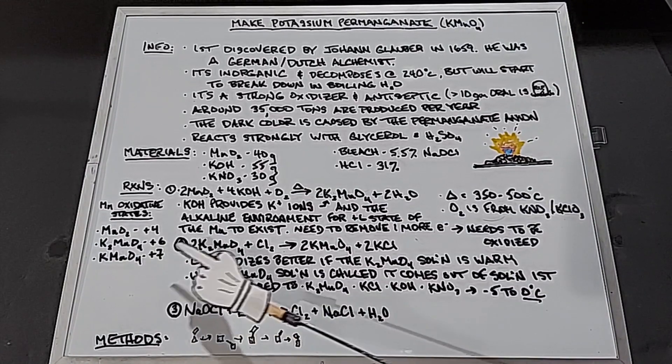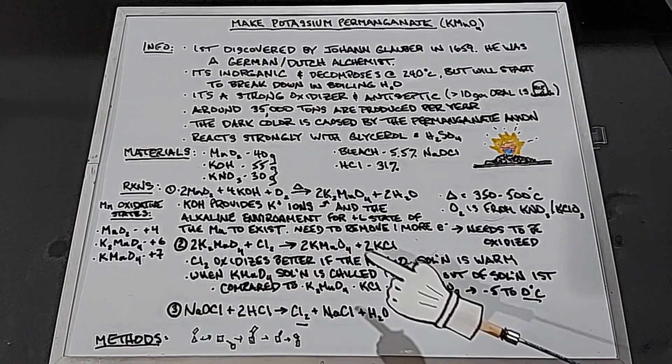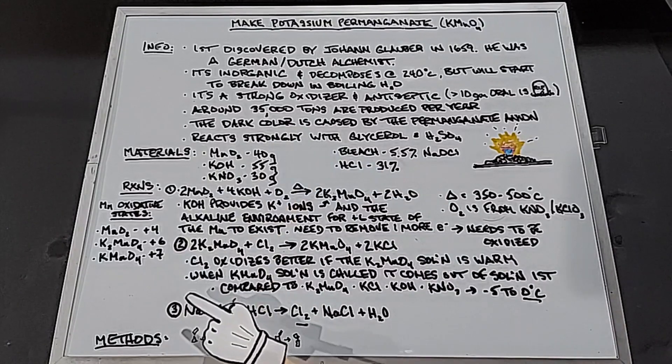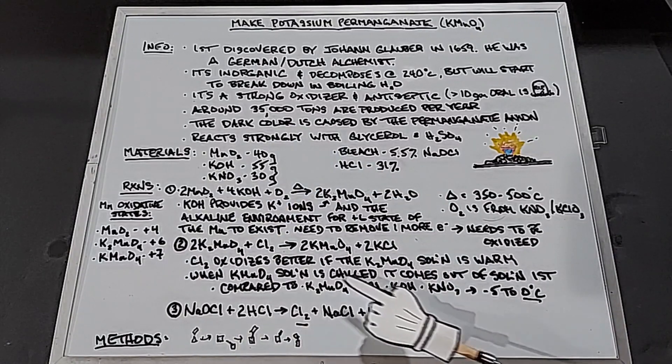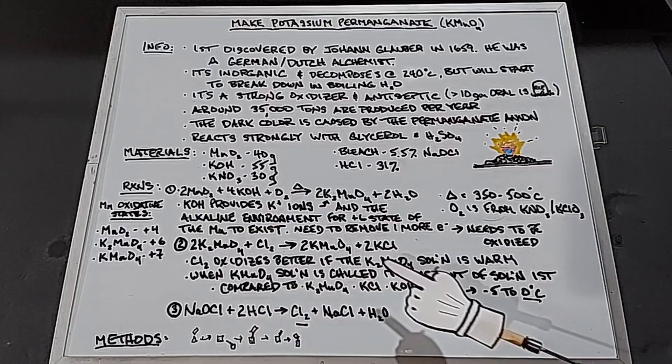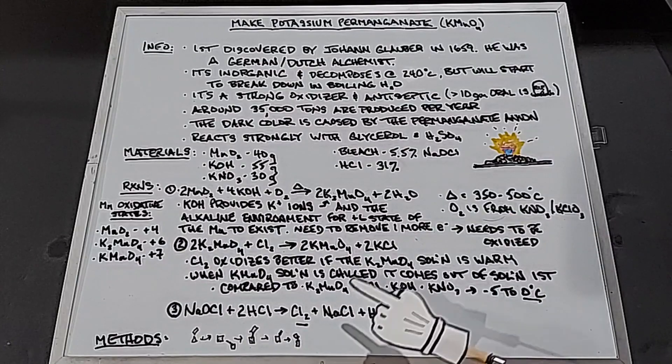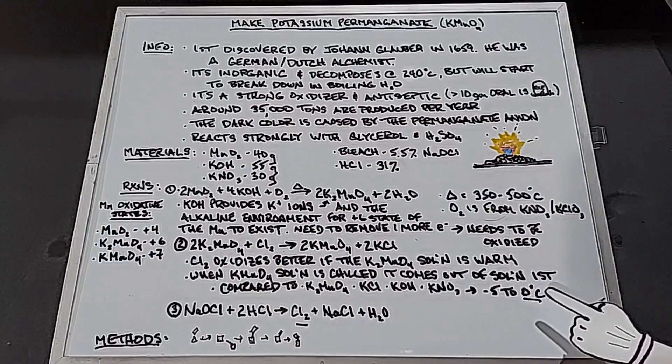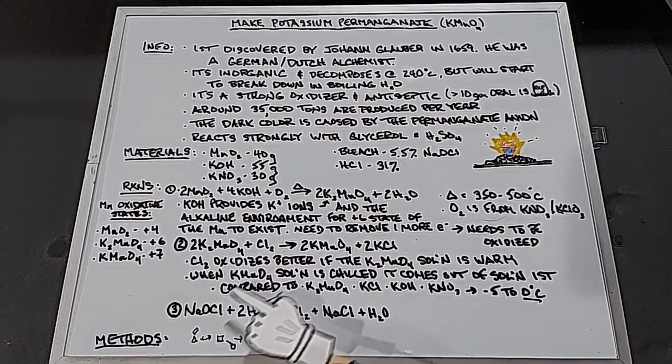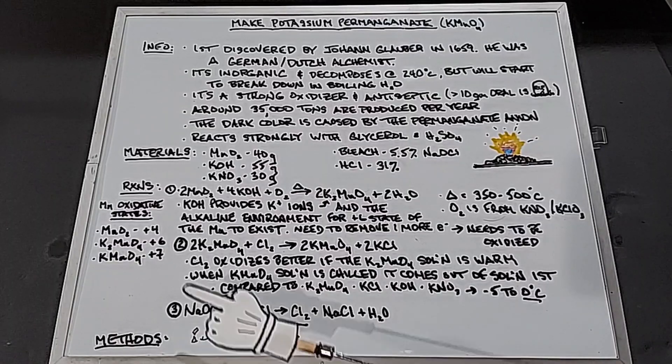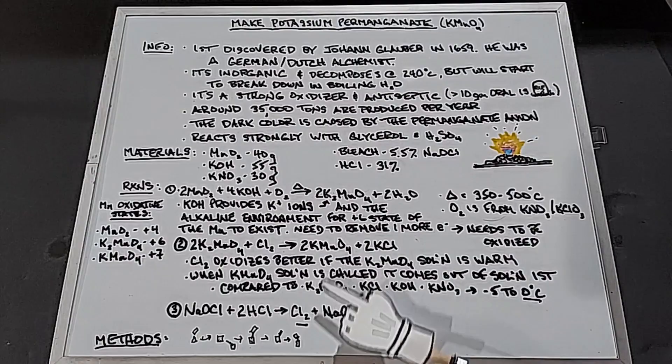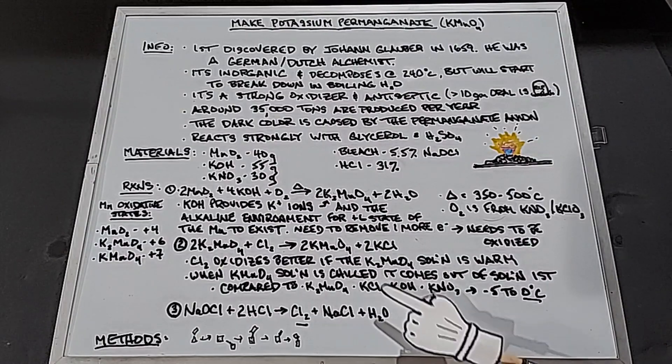Chlorine gas oxidizes better if the potassium manganate solution is warm versus cold. Later on, when the potassium permanganate solution is chilled, the potassium permanganate comes out of solution first. When I'm talking about chilled, I'm talking about negative five to zero degrees Celsius. The last reaction here is making the chlorine gas: sodium hypochlorite plus hydrochloric acid yields chlorine gas plus salt plus water.